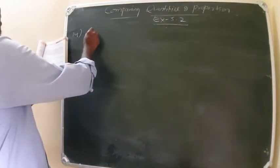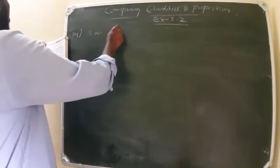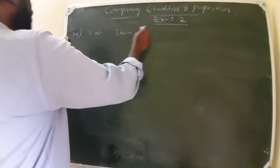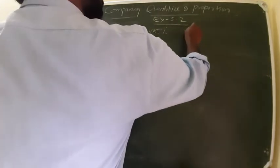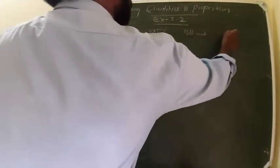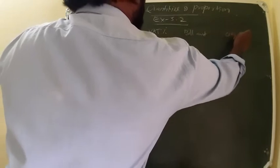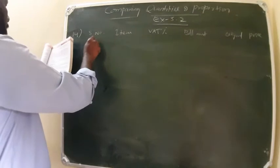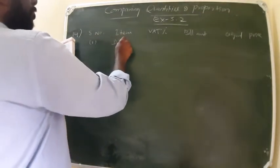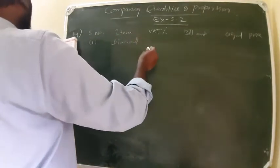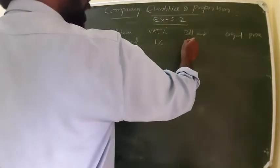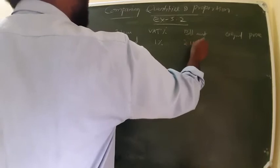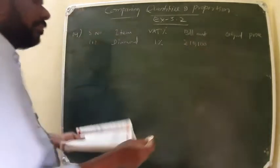Here one table is given: serial number, item, VAT percentage, bill amount, and original price. So first question here is diamond, 1% VAT, bill payment is Rs. 10,100. So original price, how much?